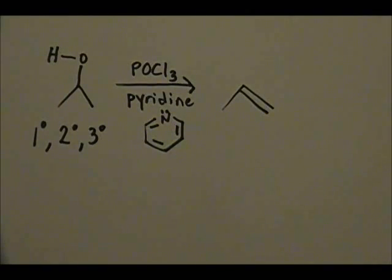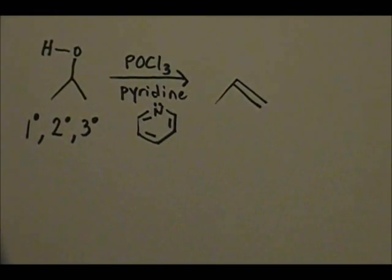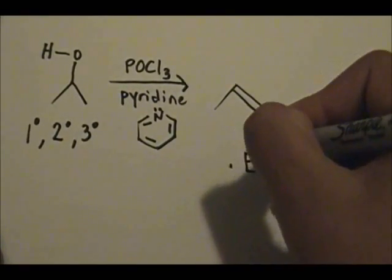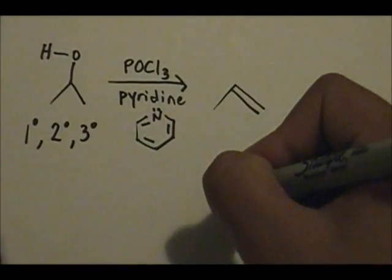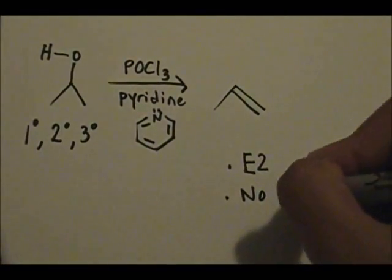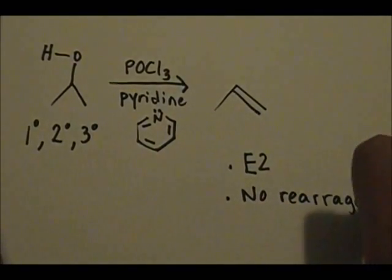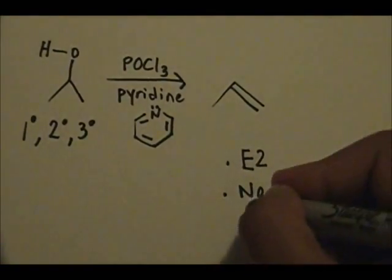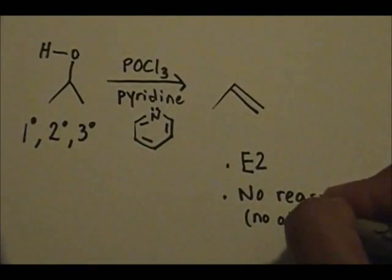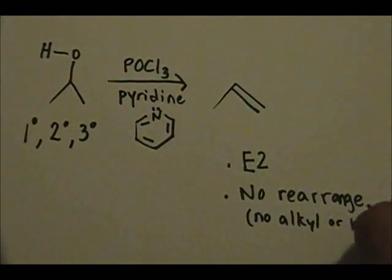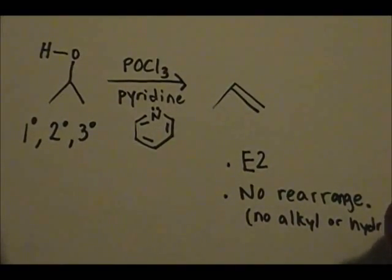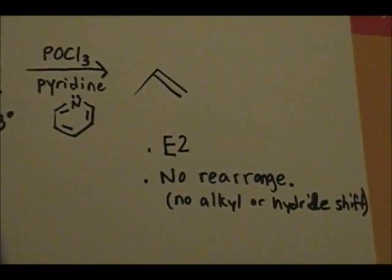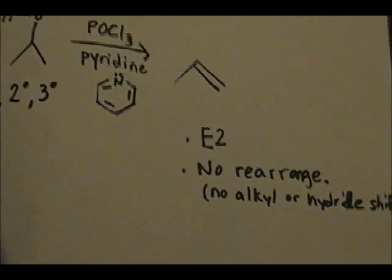A few things you need to keep in mind when doing this type of a reaction using POCl3 and pyridine is that this falls in E2 elimination style and there are no possible rearrangement. So no alkyl or hydride shifts. It's very important.